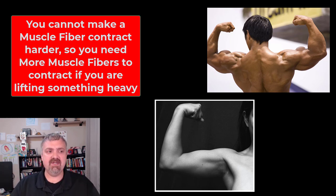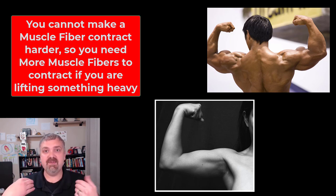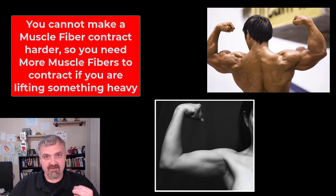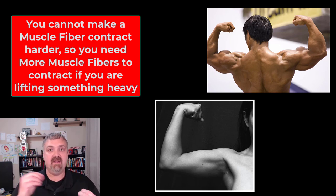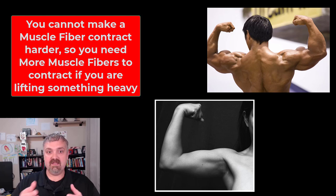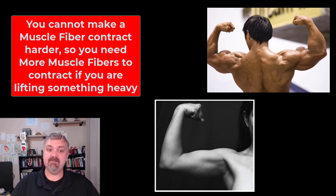A good analogy is like a gun — for a gun to fire, I have to squeeze the trigger with enough pressure. I can't make the bullet fire faster or slower out of the gun; it's either all or none. The gun is either not firing or it's firing. That's how I look at muscle fibers.